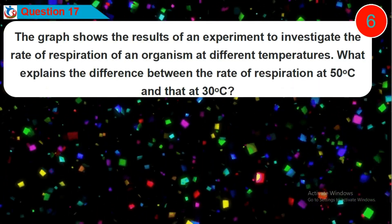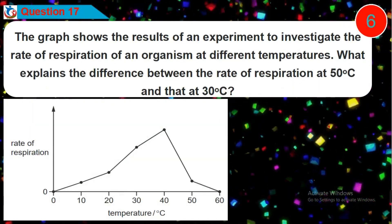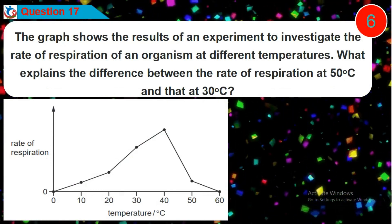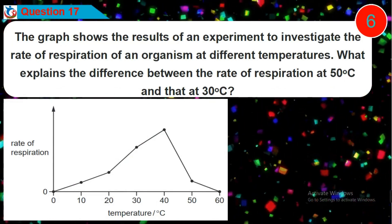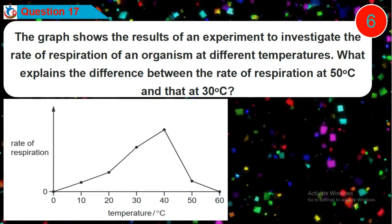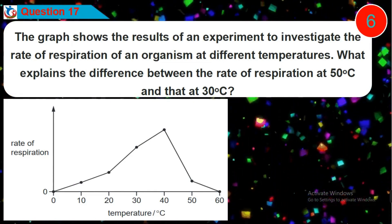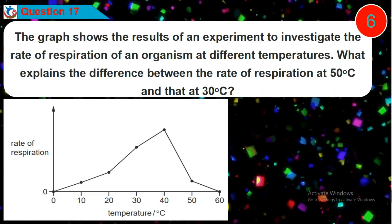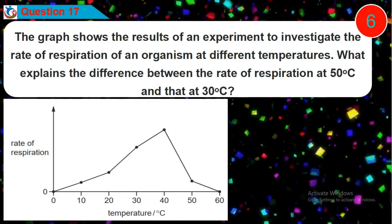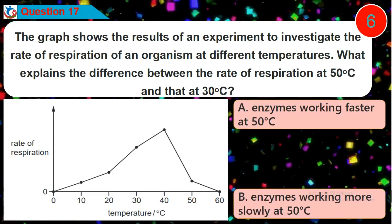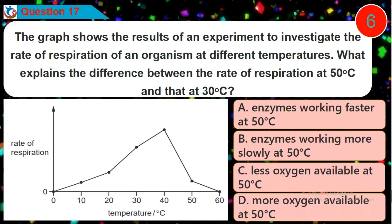Question 17: The graph shows the result of an experiment to investigate the rate of respiration of an organism at different temperatures. What explains the difference between the rate of respiration at 50 degrees Celsius and that at 30 degrees Celsius? Is it option A, B, C, or D?